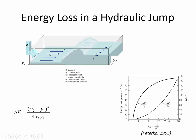The greater the Froude number, the greater the fraction of energy loss — expressed here on a percentage basis. When you get the Froude number over ten, you're losing the vast majority of the energy that was initially present. This curve expresses it in terms of the change in energy relative to the initial upstream depth and does not account for the velocity head. The second curve does account for the velocity head because E1 includes the depth and the velocity head at location one.